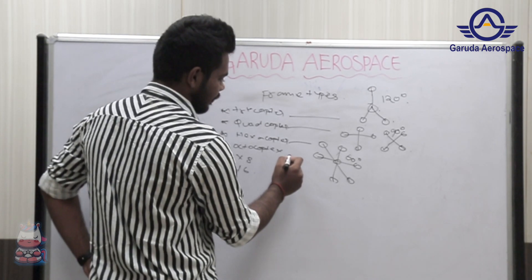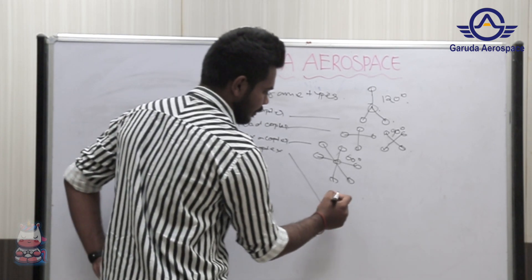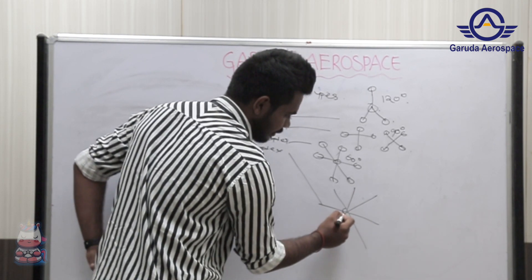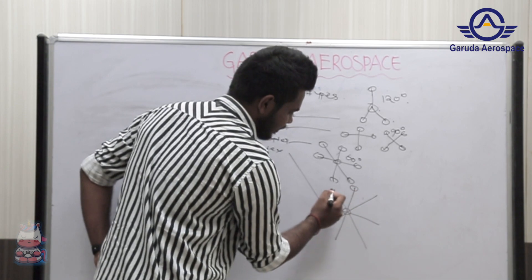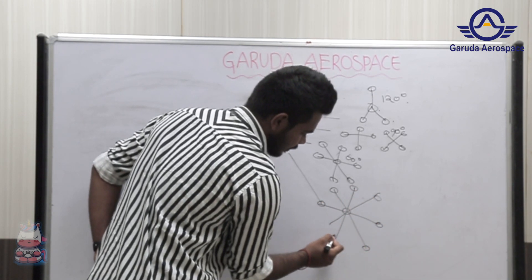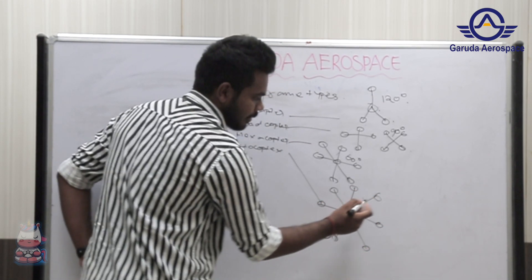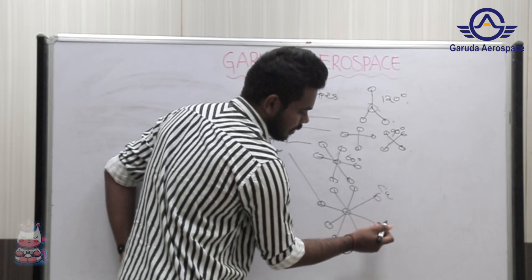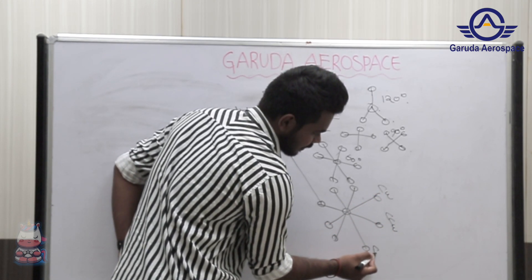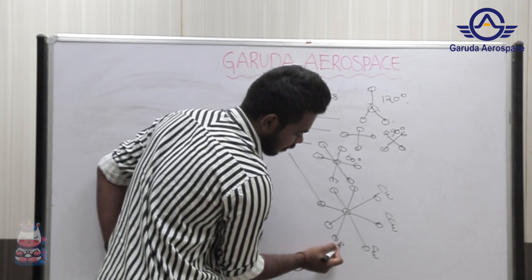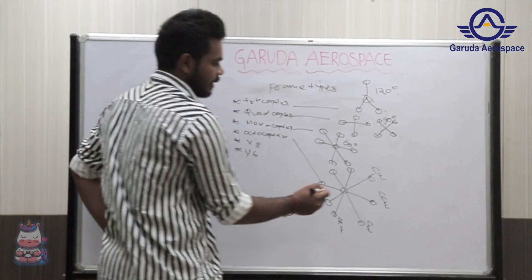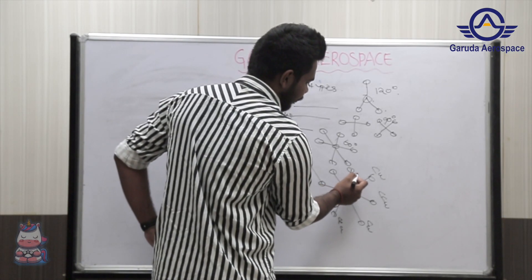Now we are coming to the octocopter. It will be having 8 arms. One motor will be connected at each arm. The first motor will be acting clockwise, the next counter-clockwise, alternating clockwise and counter-clockwise. The angle between arms will be 40 degrees.